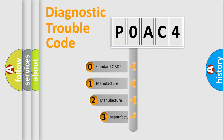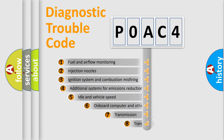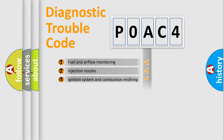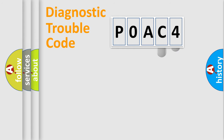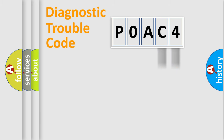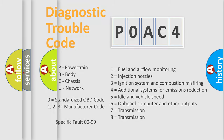If the second character is expressed as zero, it is a standardized error. In the case of numbers 1, 2, or 3, it is a more manufacturer-specific expression of the error. The third character specifies a subset of errors. This distribution is valid only for the standardized DTC code. Only the last two characters define the specific fault of the group, and this division is valid only when the second character is expressed by the number zero.